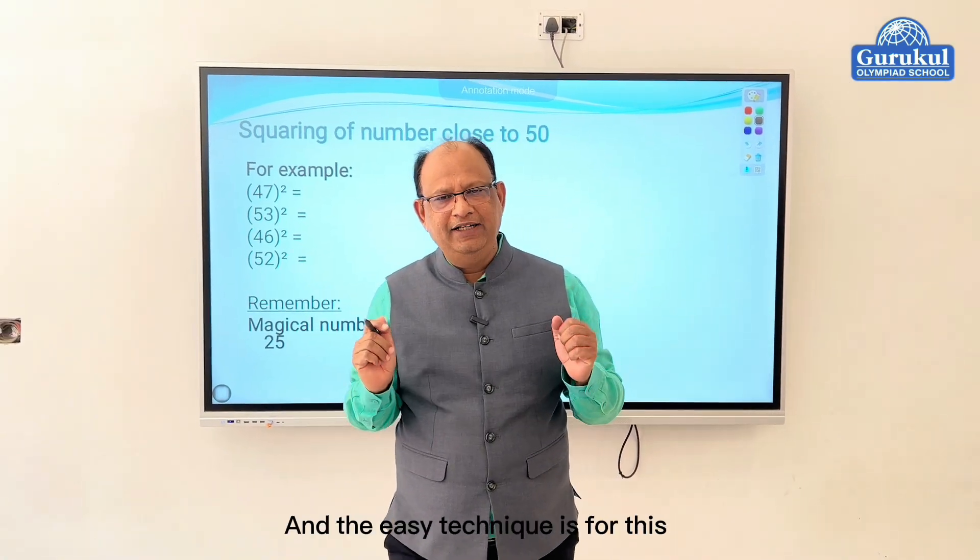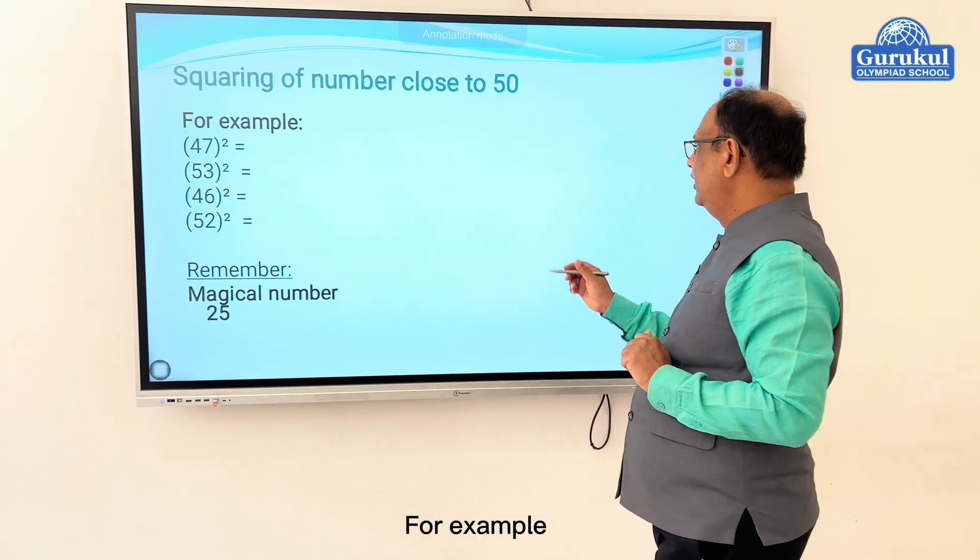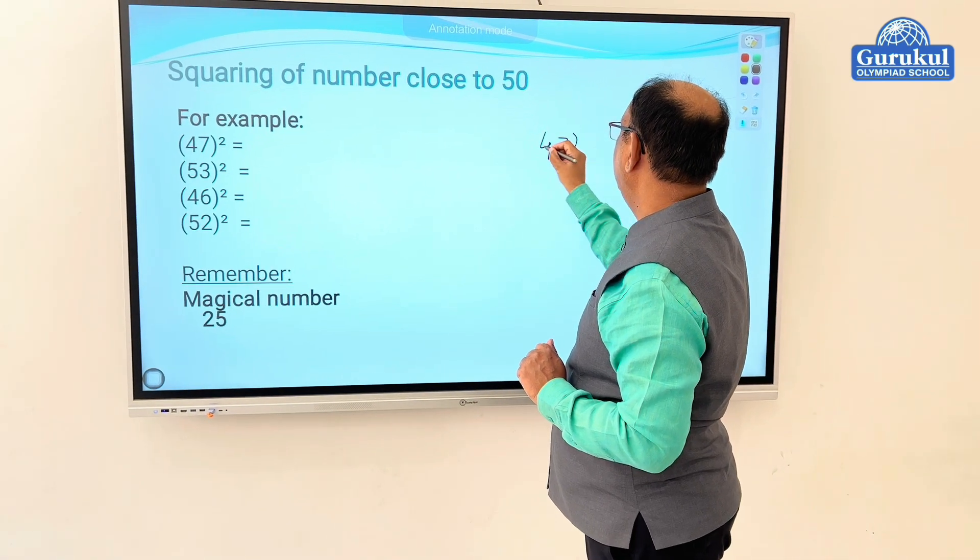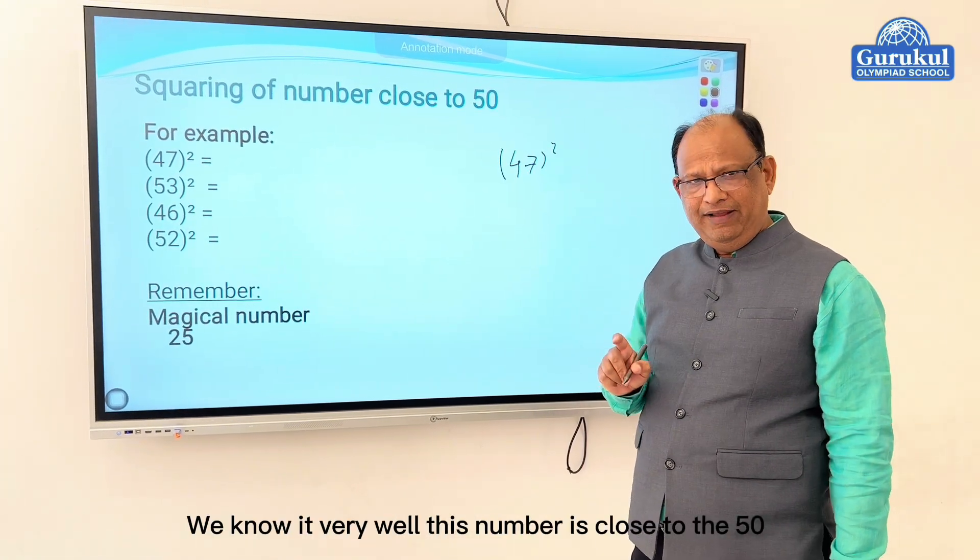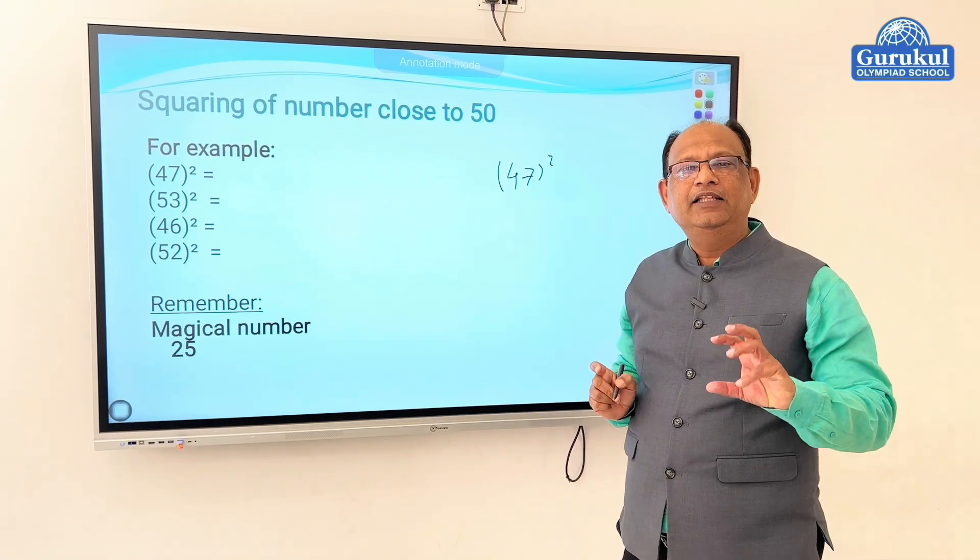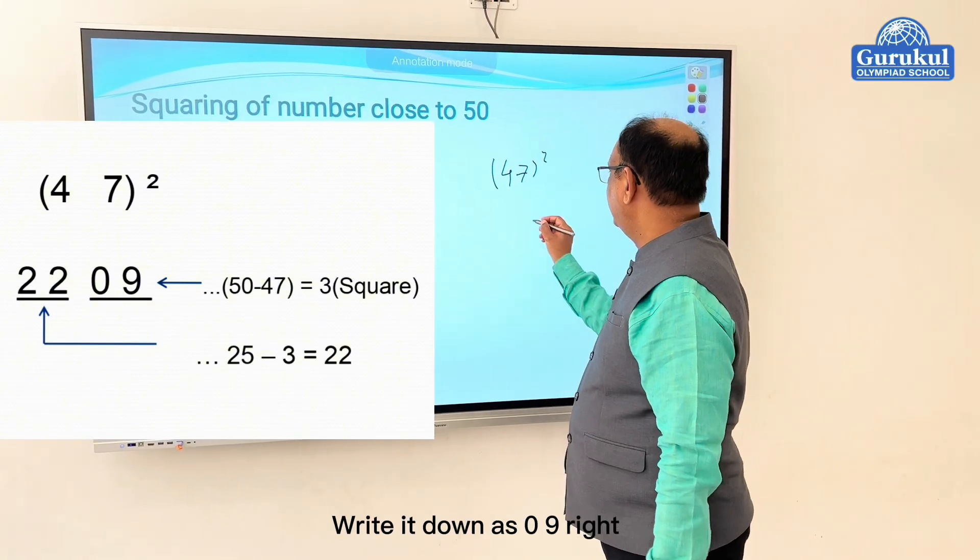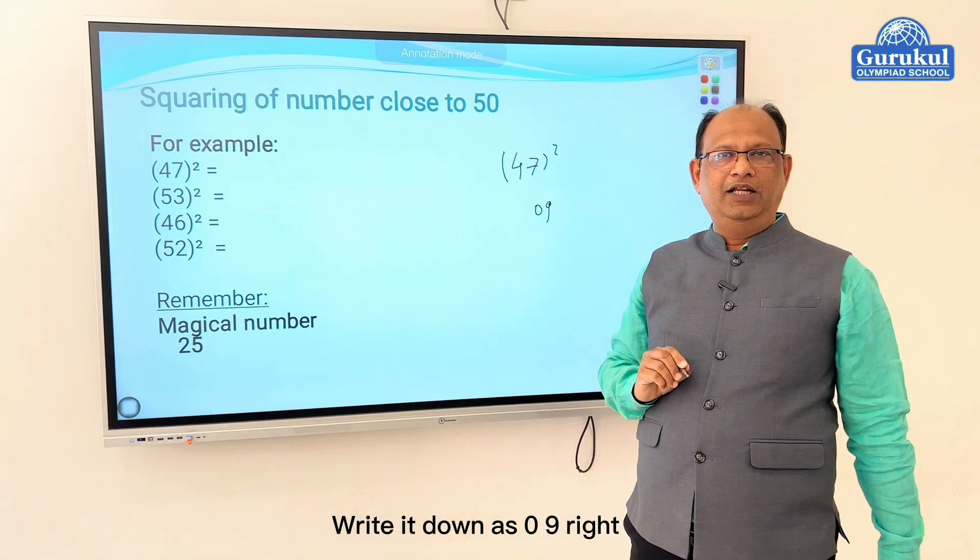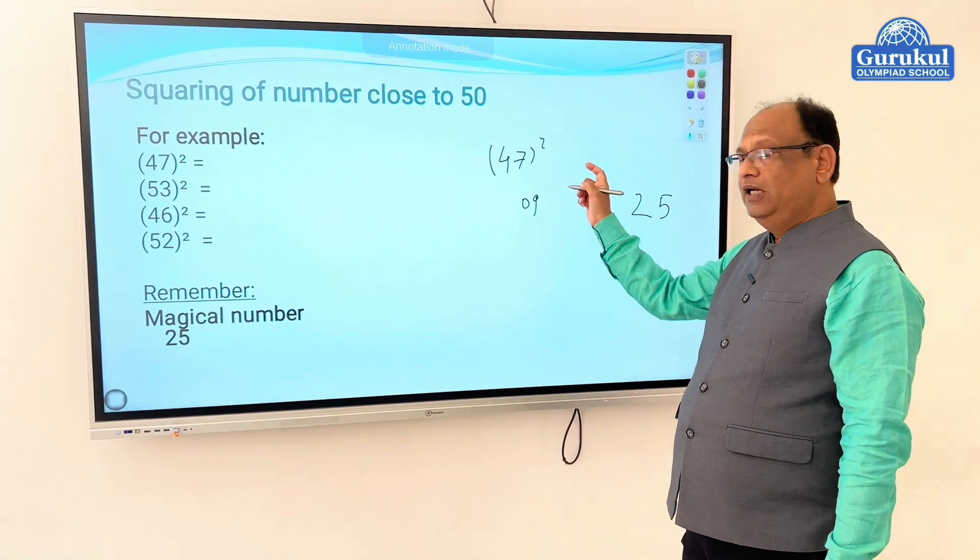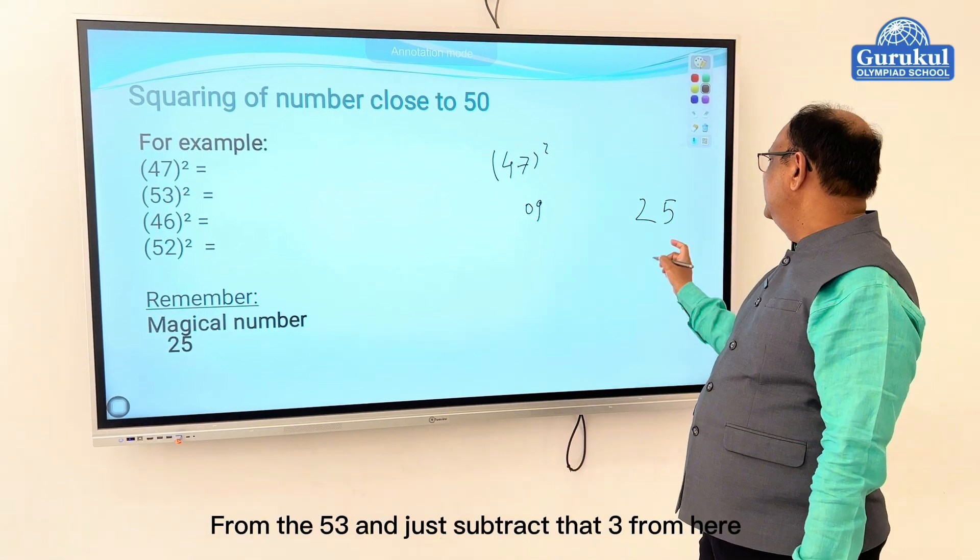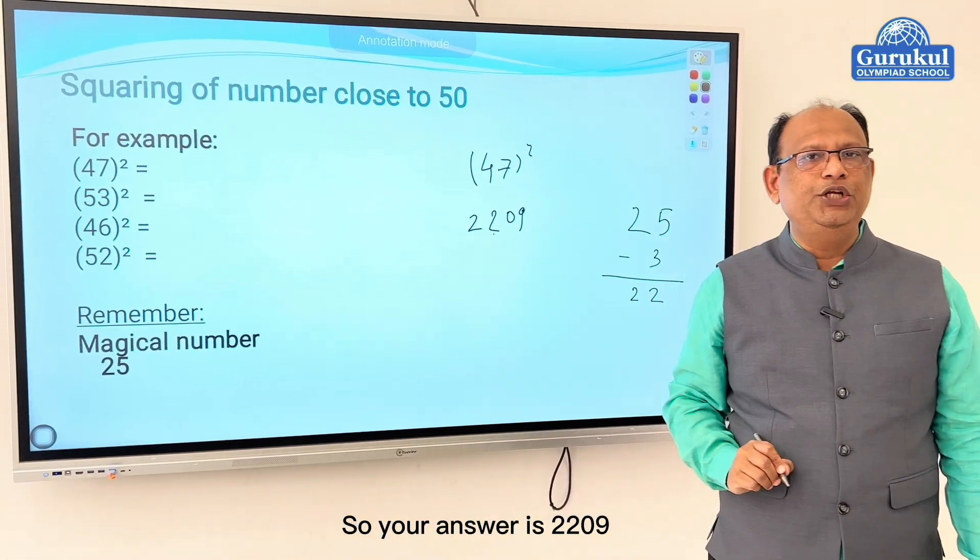I'll be sharing with you an easy technique for any number close to 50. For this you need to remember a magic number called 25. Let's check, for example, we'll try with the same 47 squared. 47 squared, we know this number is close to 50. It's three away from 50, so write three squared as 09.